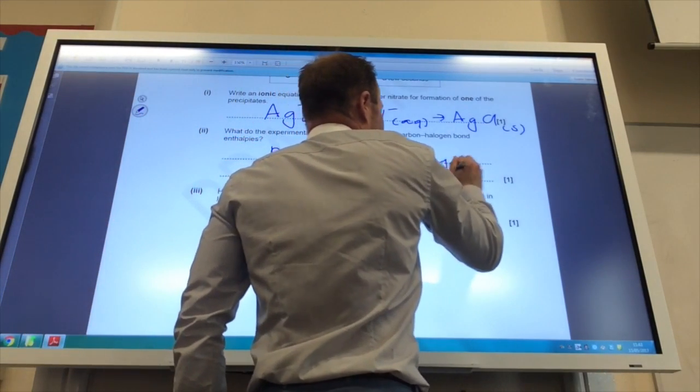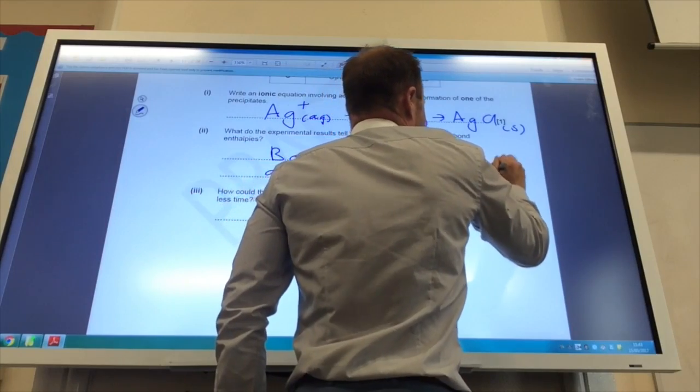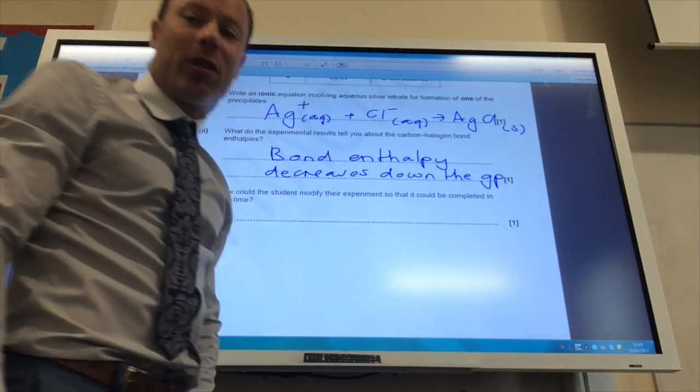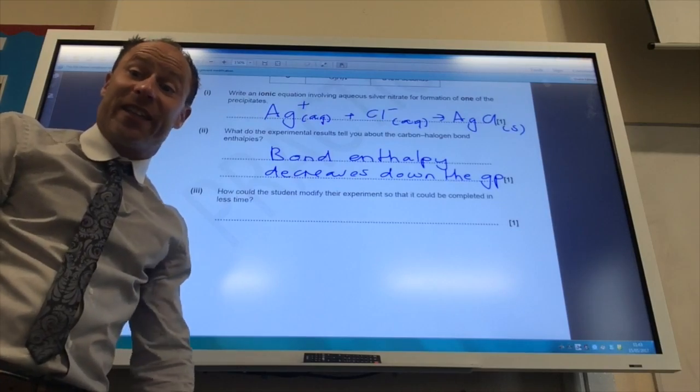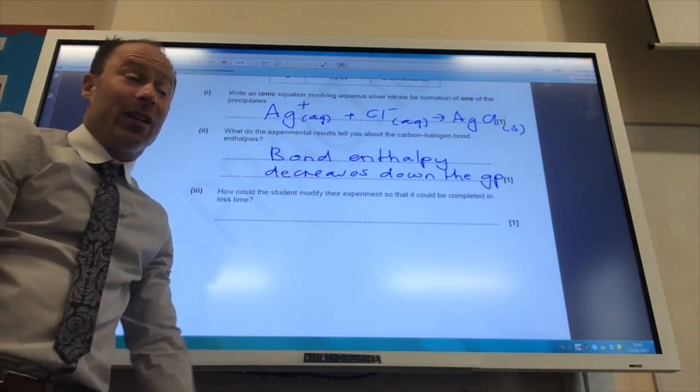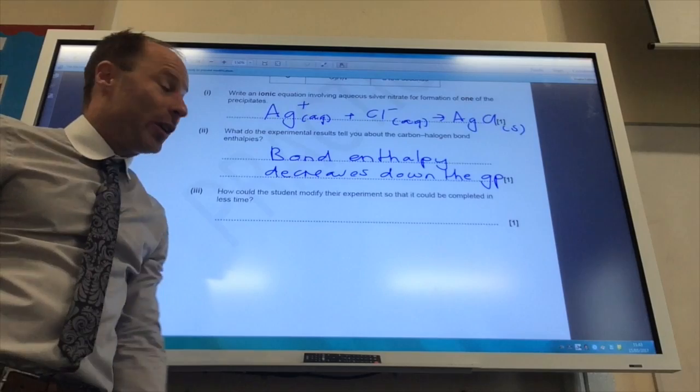The bond gets weaker. So the carbon-chlorine bond is strong, and the carbon-iodine bond is much weaker. The reason for that is the iodine atom is much bigger, so therefore the carbon-iodine bond is much longer.